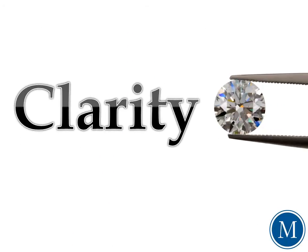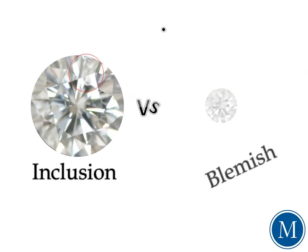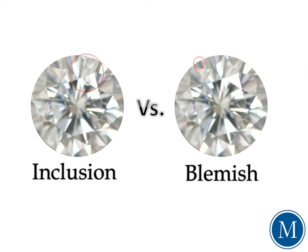Clarity is another factor that can greatly affect the value of a diamond. If you think about the fact that diamonds are formed within the earth's mantle under incredible amounts of pressure, it's really no surprise at all that most diamonds do have flaws. Basically there are two types of flaws, known as inclusions and blemishes. An inclusion refers to an internal flaw that is either completely encased or extends into the stone from the surface.